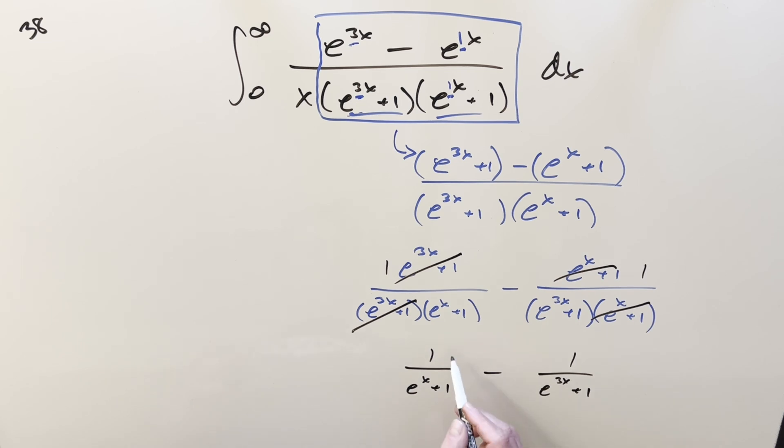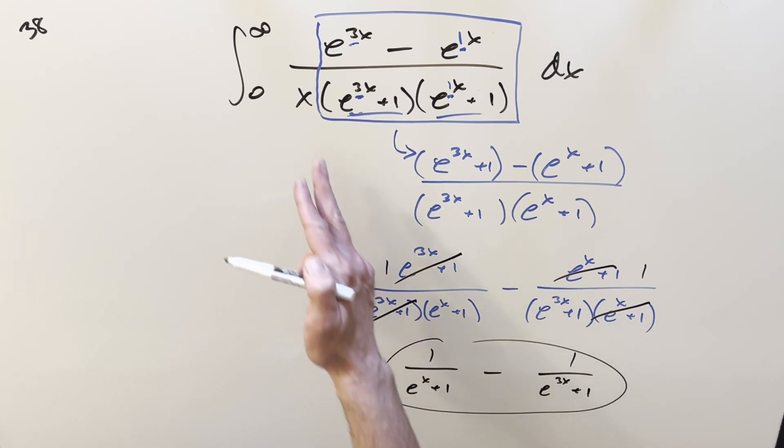And what I'm going to do is we'll take this, put this back in the integral, but I'll write it a particular way. I'm going to actually put this into the numerator and put it all over this x we still have here.